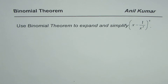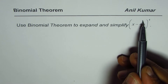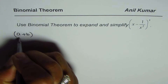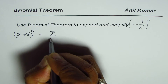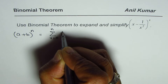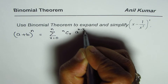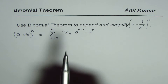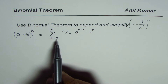I am Anil Kumar and in this video we will learn how to apply the binomial theorem when negative and fractions are involved. In general, if you have a term (a + b) to the power of n, it can be written in sigma notation as the sum from r equals 0 to n of nCr times a to the power of (n minus r) times b to the power of r. This means we sum all terms where r increases from 0 to n, and these are all whole numbers.